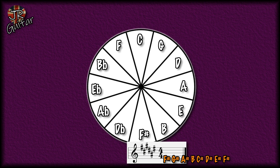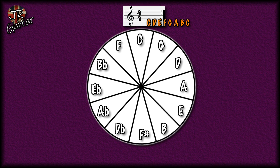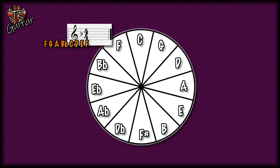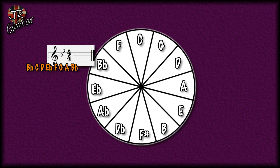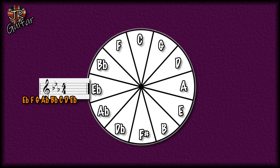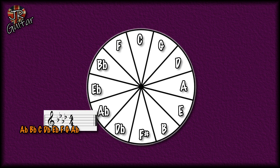If we go any further clockwise we'd end up with double-sharped notes, so now we go back to C major and travel anti-clockwise. The key of F has one flat — B flat. Two flats is the key of B flat, with B flat and E flat. Three flats is the key of E flat: E flat, A flat and B flat. Four flats is the key of A flat: A flat, B flat, D flat and E flat. Five flats is the key of D flat: D flat, E flat, G flat, A flat and B flat.